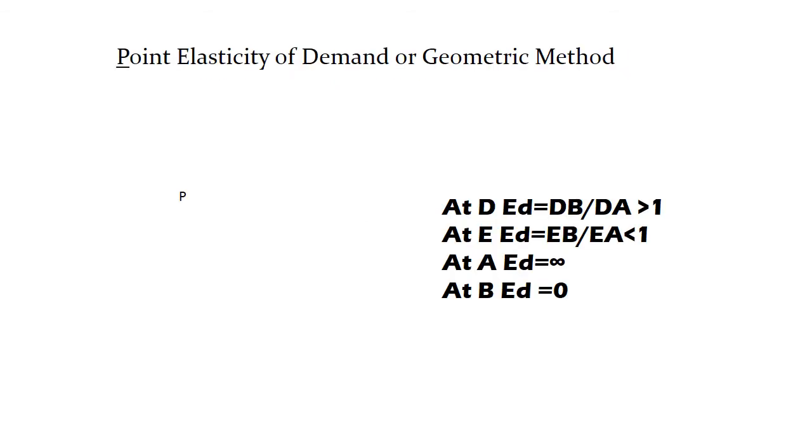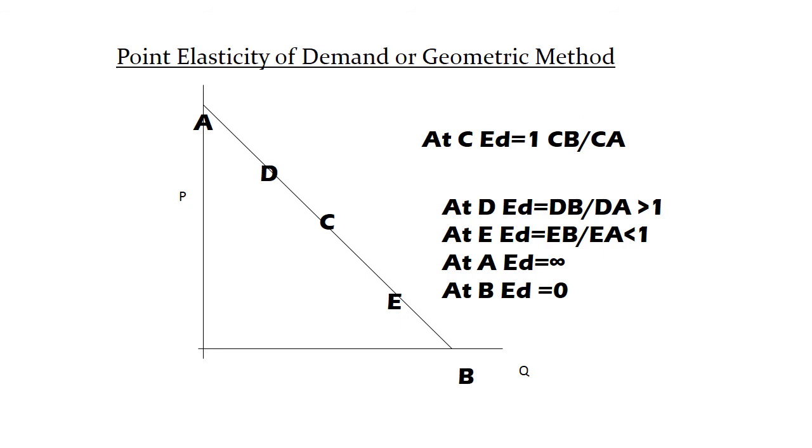Another method is point elasticity of demand or geometric method. In this also, we try to calculate elasticity at a particular point on the demand curve. So we have the demand curve, it is extending from D to E. And what we do is, we extend it further till it touches Y axis at point A. And from here also, we extend it further till it touches the X axis at point B. We have the center point C. The formula is lower segment of the demand curve upon upper segment. At point C, lower segment is equal to the upper segment. So at point C, elasticity is equal to 1.